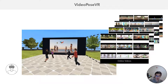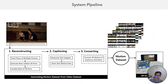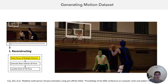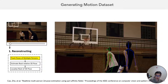So the user wears the headset and is inside the virtual reality. They search for the video with the motion they want, and then the system extracts the motion and applies it to the character directly inside the VR. The system pipeline of Video Post VR has two major components: the first one is to generate the motion dataset, and then after we have this motion dataset, we implement the VR application to allow users to access and edit it inside the virtual reality.